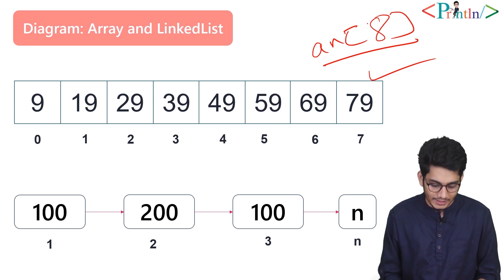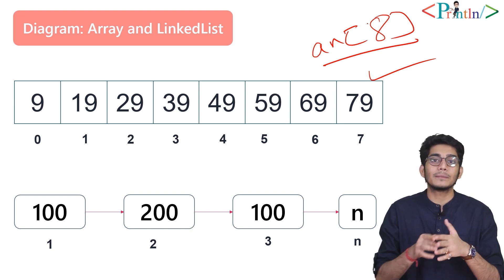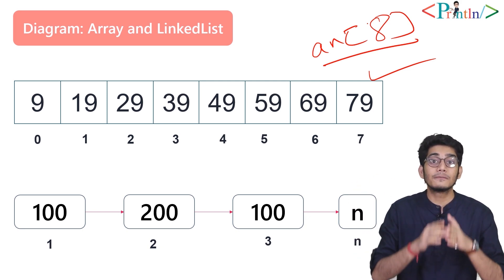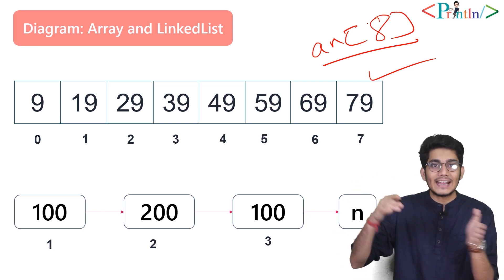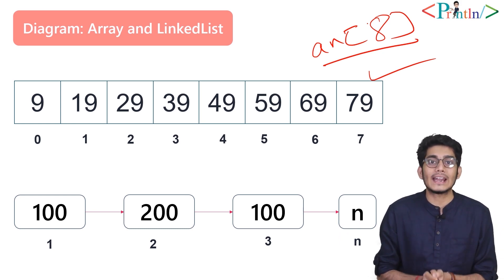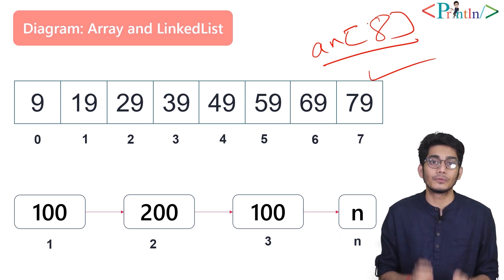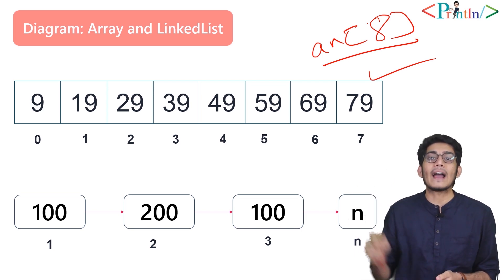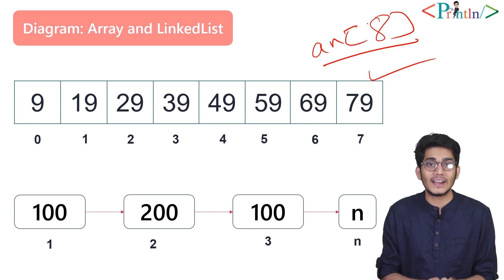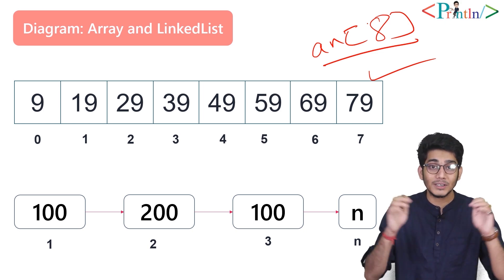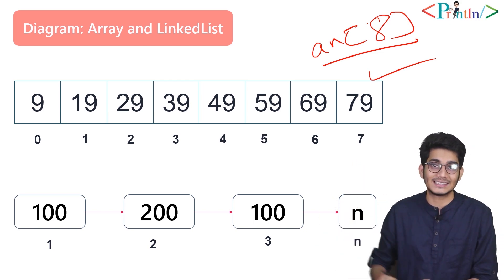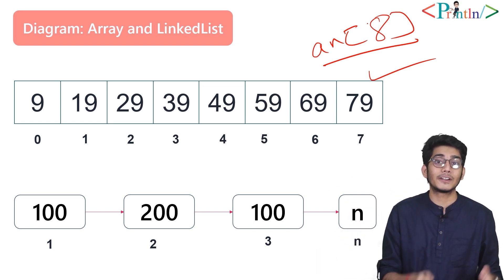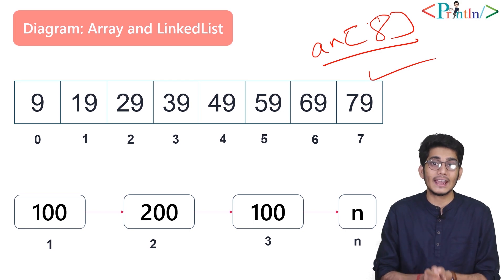You might ask: how many nodes can we allocate in a linked list? We can allocate an infinite number of nodes, though it depends on system memory. So linked list is 'infinitely finite' — we can add as many nodes as we want, but it is bounded by system memory. There is no wastage of memory since we allocate nodes only as per requirement.